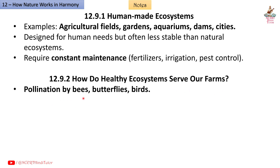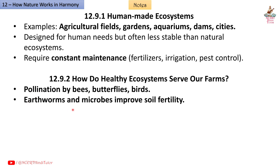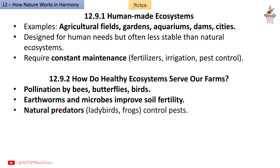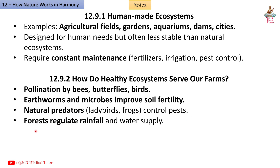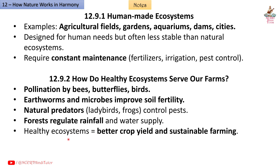12.9.2: How do healthy ecosystems serve our farms? Pollination by bees, butterflies, and birds. Earthworms and microbes improve soil fertility. Natural predators — ladybirds, frogs — control pests. Forests regulate rainfall and water supply. Healthy ecosystems lead to better crop yield and sustainable farming.